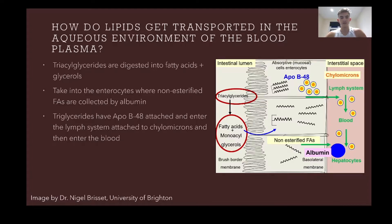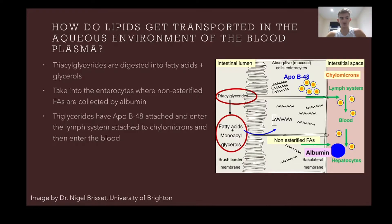These are taken up by cells in the intestine — as you can see the villi across the center in the image — and taken up by enterocytes into the body. The free fatty acids and glycerols, because they are non-esterified, can easily be taken up by albumin and transported directly into the blood.